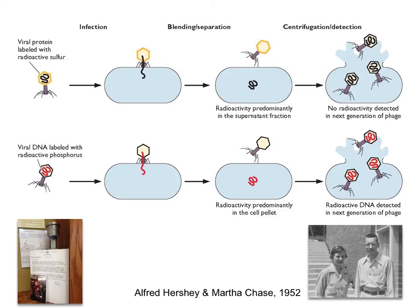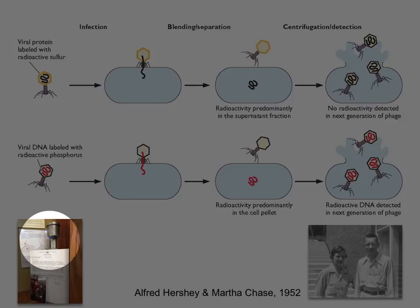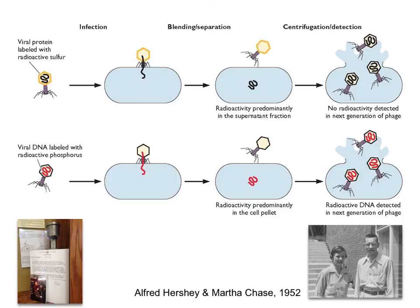Hershey-Chase we'll talk about right here. They worked at Cold Spring Harbor for many years out on Long Island, and they did this very famous experiment using a food blender — a common kitchen blender. They wanted to know: if you take a bacteriophage, what is the genetic information that specifies the production of more viruses? Is it the protein shell or is it the nucleic acid?